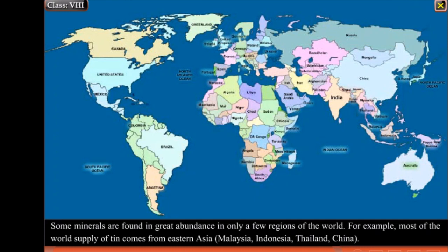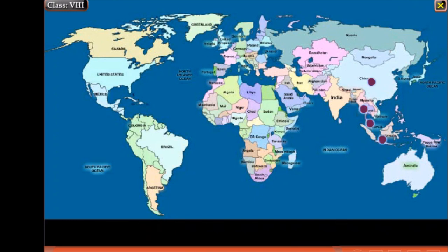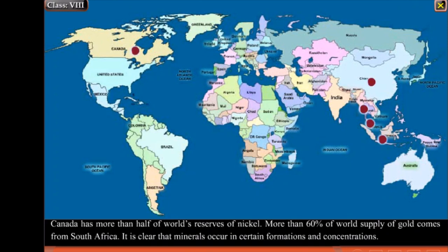Some minerals are found in great abundance in only a few regions of the world. For example, most of the world's supply of tin comes from Eastern Asia — Malaysia, Indonesia, Thailand and China. Canada has more than half of the world's reserves of nickel. More than 60% of the world's supply of gold comes from South Africa. It is clear that minerals occur in certain formations and concentrations.